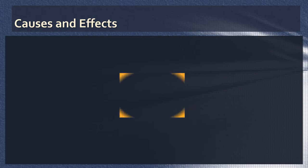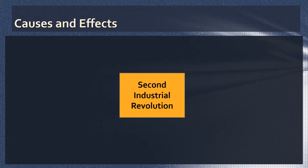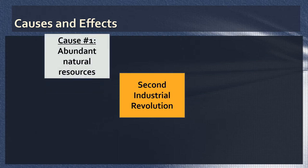I have a causes and effects chart for the Industrial Revolution. We're going to put the Second Industrial Revolution in the center as our event. Our first cause is abundant natural resources. America takes off industrially because it has resources: water, coal, oil, gold, silver, copper, iron. You need resources in order to have an Industrial Revolution — raw materials that you can turn into manufactured goods.